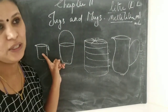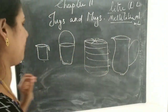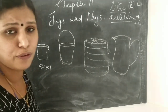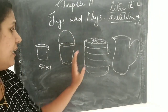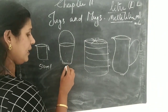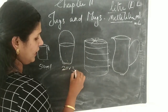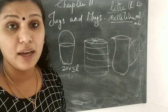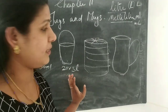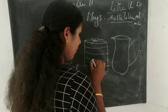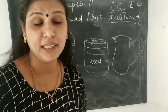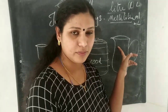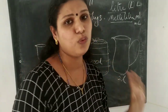For containers holding less than one litre, we use millilitres. A cup or mug may hold about 350, 400, or 500 millilitres. A bucket holds two, three, or even five litres of water. A motor/water tank holds about 500 litres or even a thousand litres. A jar holds about two litres of water.